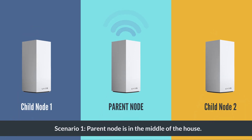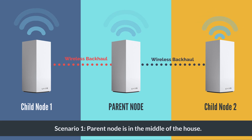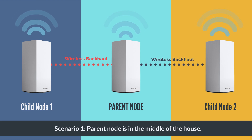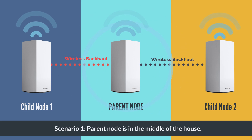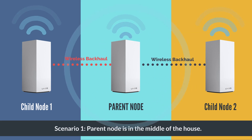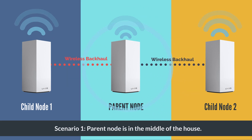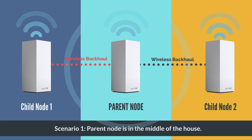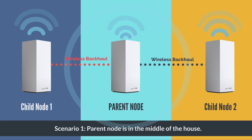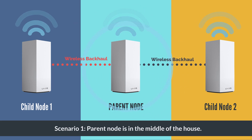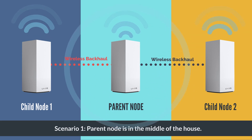Let's have our first scenario. In this example, we can see that both child nodes 1 and 2 are connecting directly to the parent node using a wireless backhaul. Overall, this node layout is ideal if the parent node is in the middle of the house. It may be unavoidable to have all the child nodes connect directly to the parent node because it is centrally located.